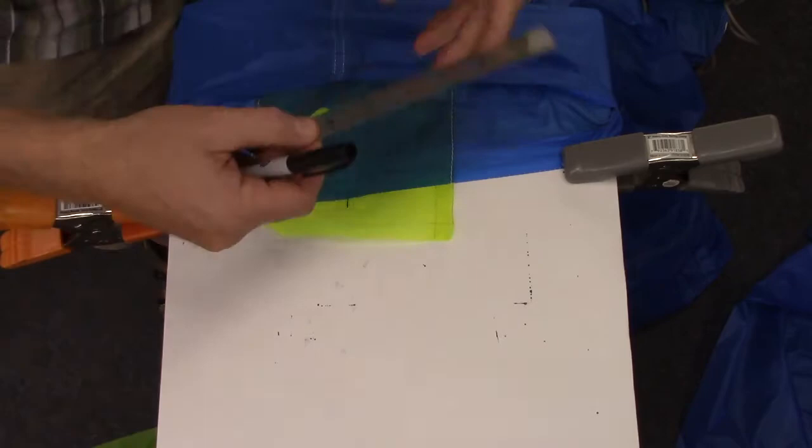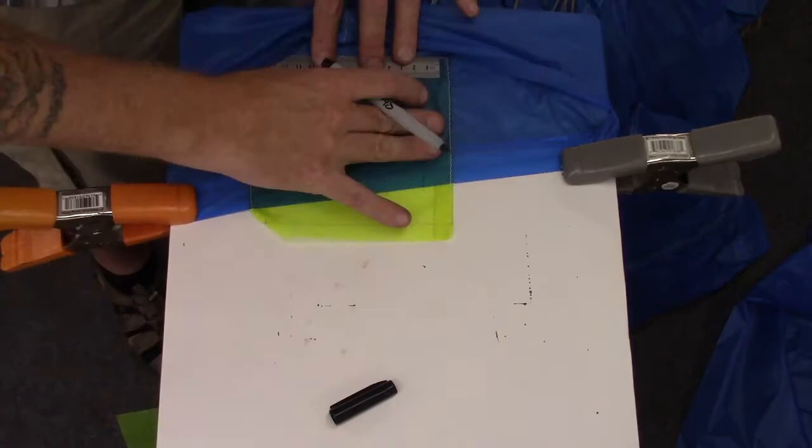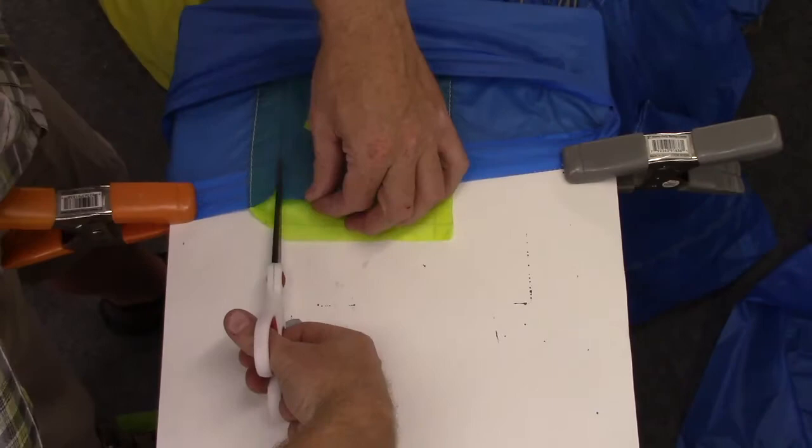Using the technique you learned in the basic patching video, mark all the way around the inside of the damaged area now using your 5 eighths of an inch wide ruler and then mark your easements for the corners and cut out the damage.